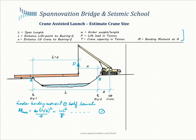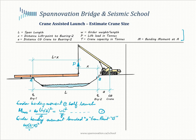Next we'd write a general equation for bending moment when the crane starts assisting, assuming the pick point is at a distance x from point B. This would be equal to the negative moment from the cantilever — which is the unit load times the cantilever length squared divided by 2 — minus the positive moment from the tip load, which would be equal to the load P times the cantilever length. We'll call this equation 2.